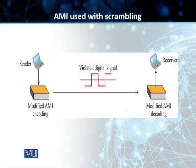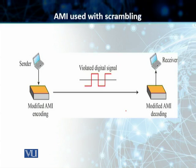Let's move to the next slide and understand scrambling further. In this particular case, as you can see, we are using AMI — alternate mark inversion — with scrambling. A noteworthy point is that AMI encoding and scrambling are both happening at the encoder. In block coding, we employed three different processes, all happening before the NRZI encoding. In this case, we can bring in efficiencies because we are doing the scrambling as well as the AMI encoding in one single stage. What we are going to do is modify part of the AMI rule to include scrambling.